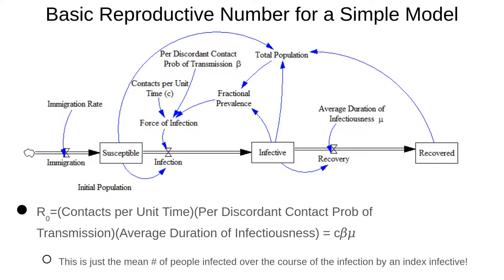For a simple SIR model, we can actually calculate in closed form — just write down a formula for — the basic reproductive number: the number of people an infective will infect if they're surrounded entirely by susceptibles before they recover. Think about this infective entirely surrounded by susceptibles, so S over N is one. They're going to be infecting per unit time: C times one times beta per unit time.